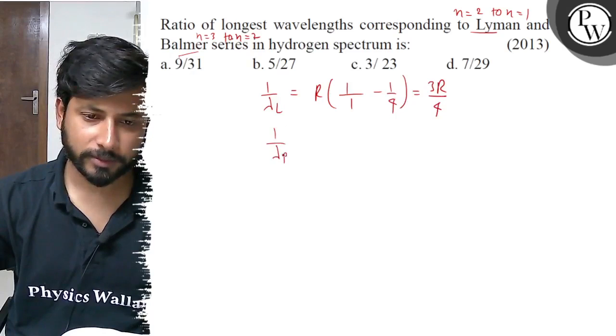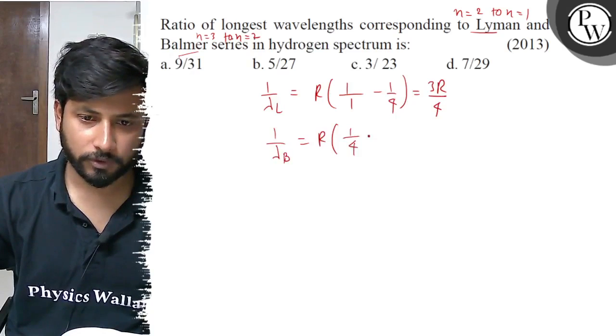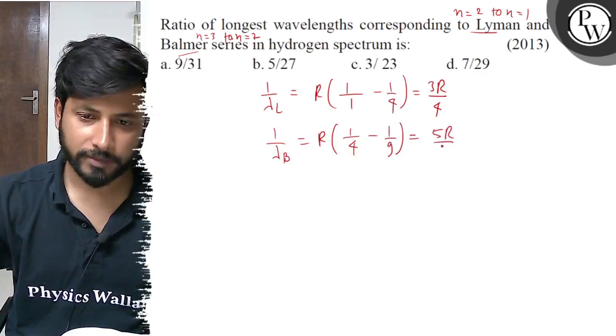For Balmer, 1 by lambda equals R, 1 by 4 minus 1 by 9, which equals 5R by 36.